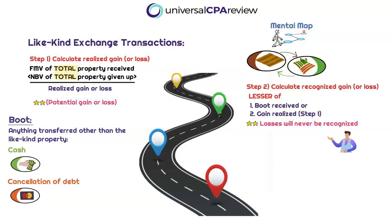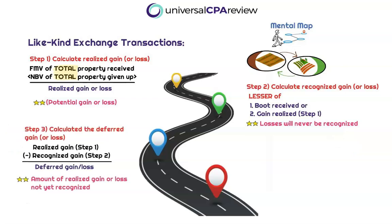That takes us to step three, which is determining the deferred gain or loss. Of the amount realized in step one, how much is getting recognized today and what amount is getting deferred for a later period? We already know that losses will never be recognized, so the entire amount will always get deferred and flow right into step three. And here's a little trick: if boot is not received at all, the answer recognized in step two is always going to be zero, meaning the entire realized gain from step one would always flow into step three as it is getting deferred.